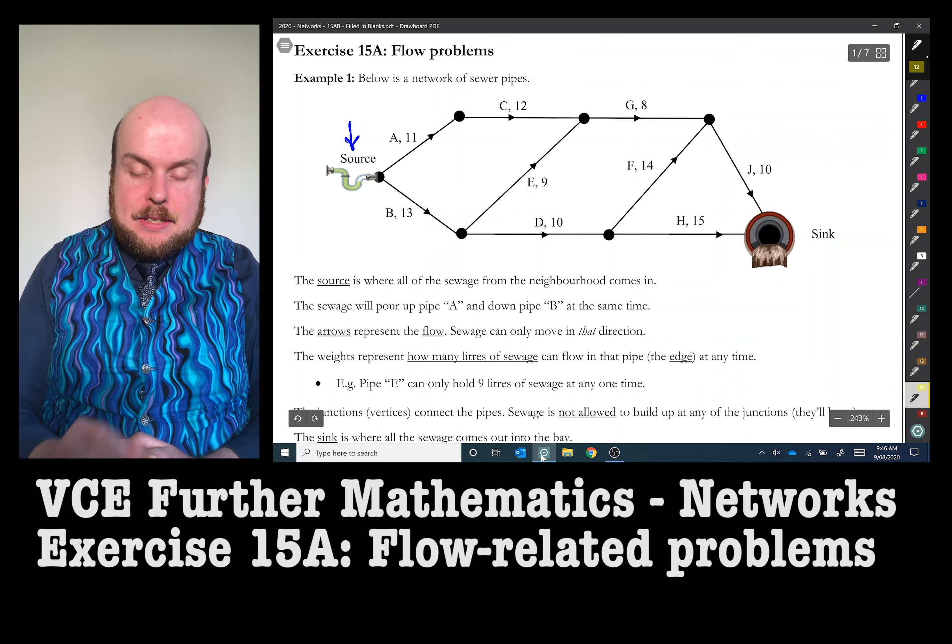If I look at the last two vertices, the ones going into the sink, I know 15 liters can go through H and 10 liters can go through J. So that's a maximum of 25. If I look at the source though, 11 liters are going through and 13 liters are going this way. So that must mean that no more than 24 liters will be pumping in at any time. So it is likely to be smaller than that because there are some smaller pipes.